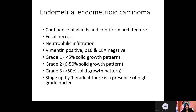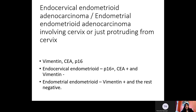In this case, Vimentin was positive and P16 and CEA were negative. We performed P16 and CEA because the tumor was coming out of the cervix and it was just a biopsy. If it is endometrial endometrioid adenocarcinoma, then Vimentin will be positive and P16 and CEA will be negative. If it is endocervical endometrioid, then Vimentin is negative and P16 and CEA will be positive.